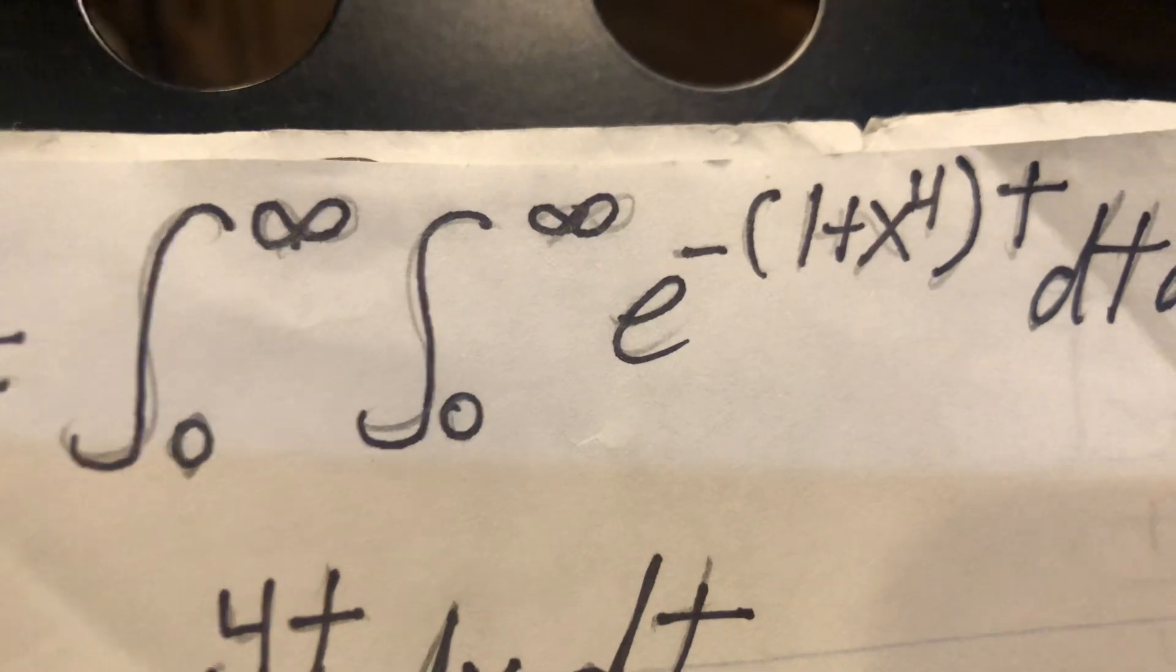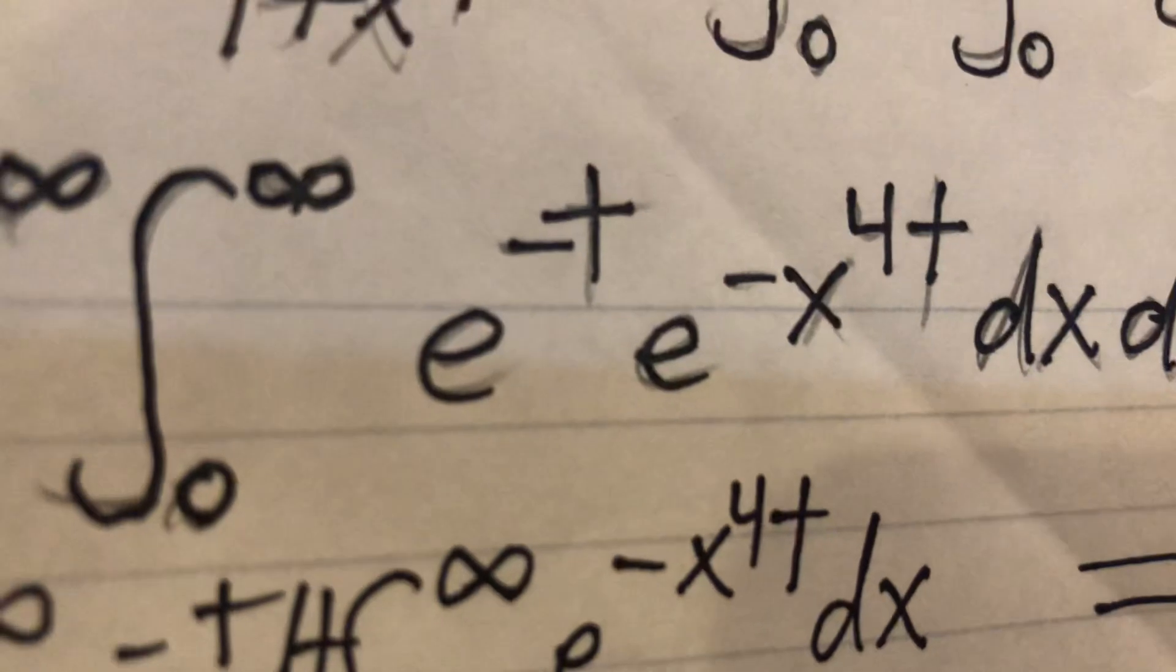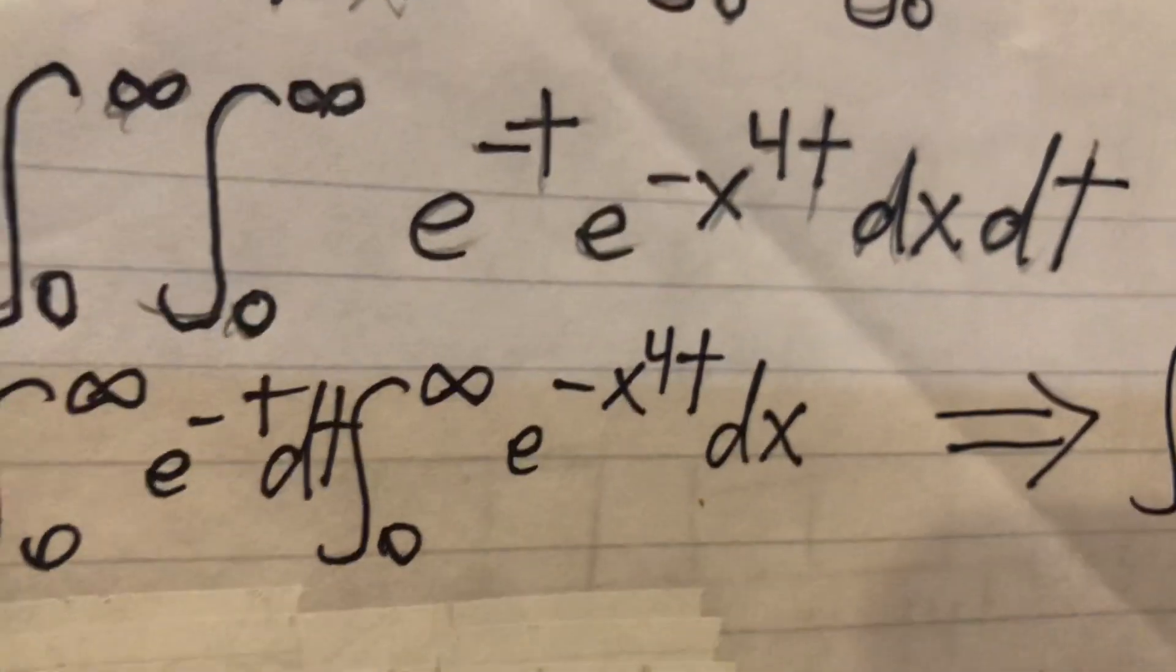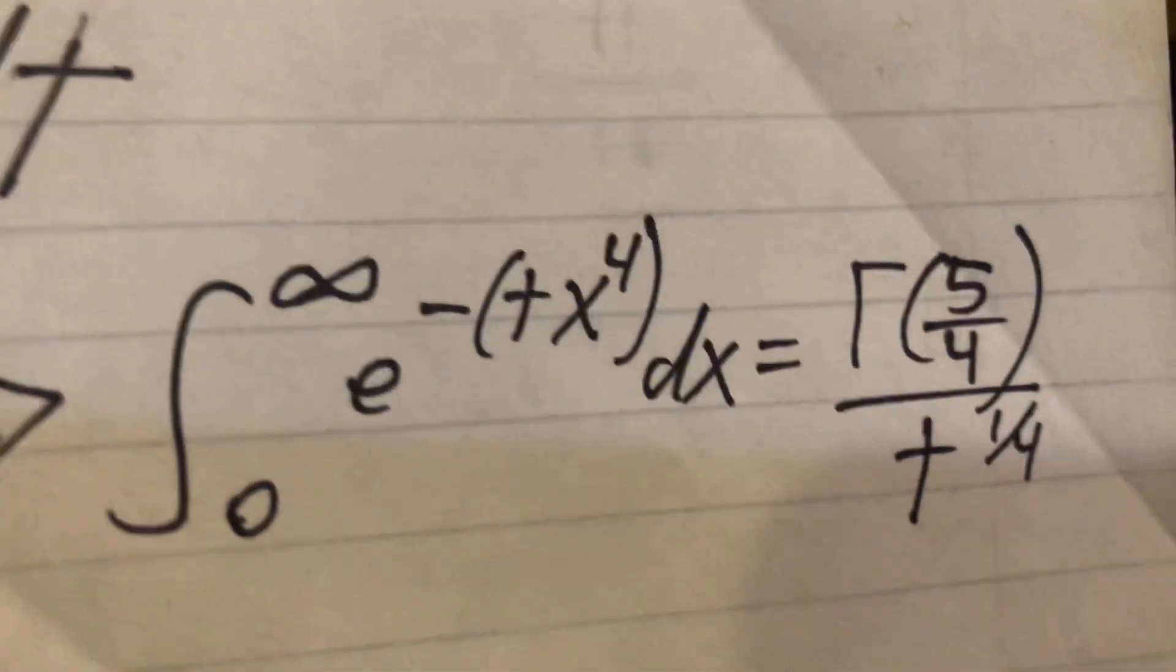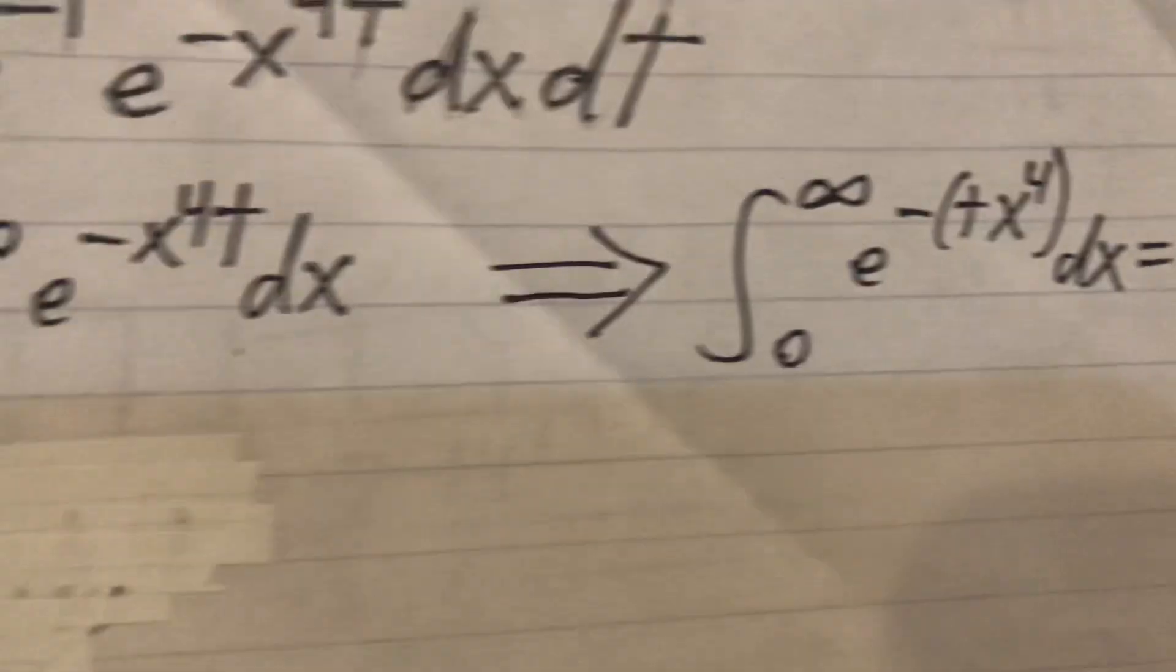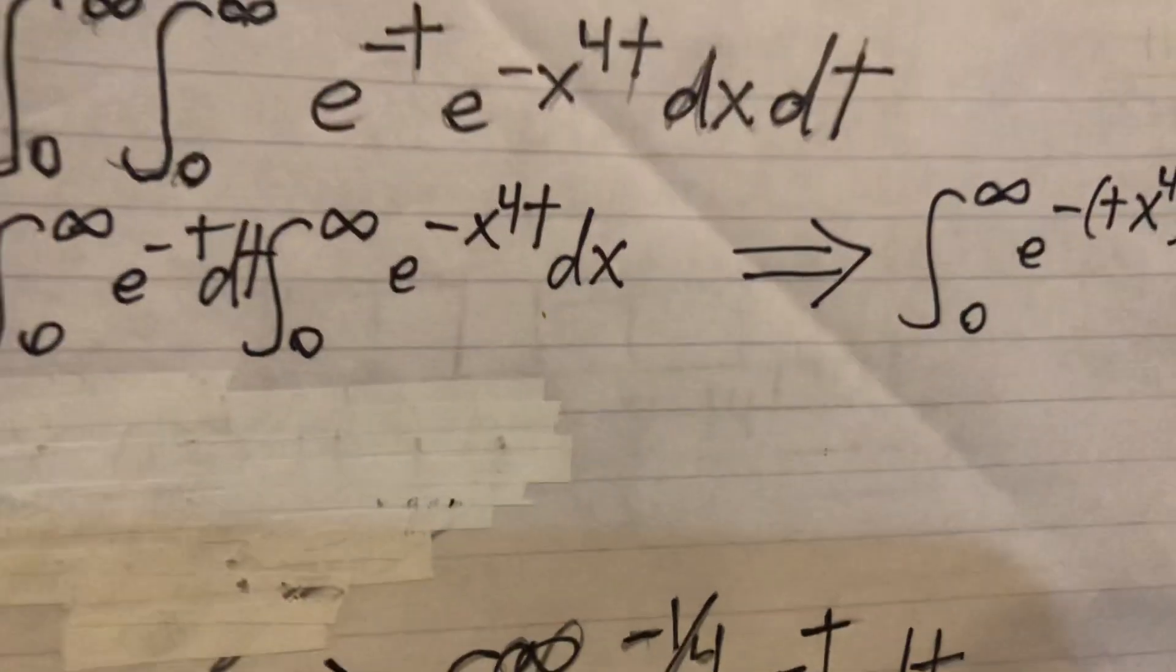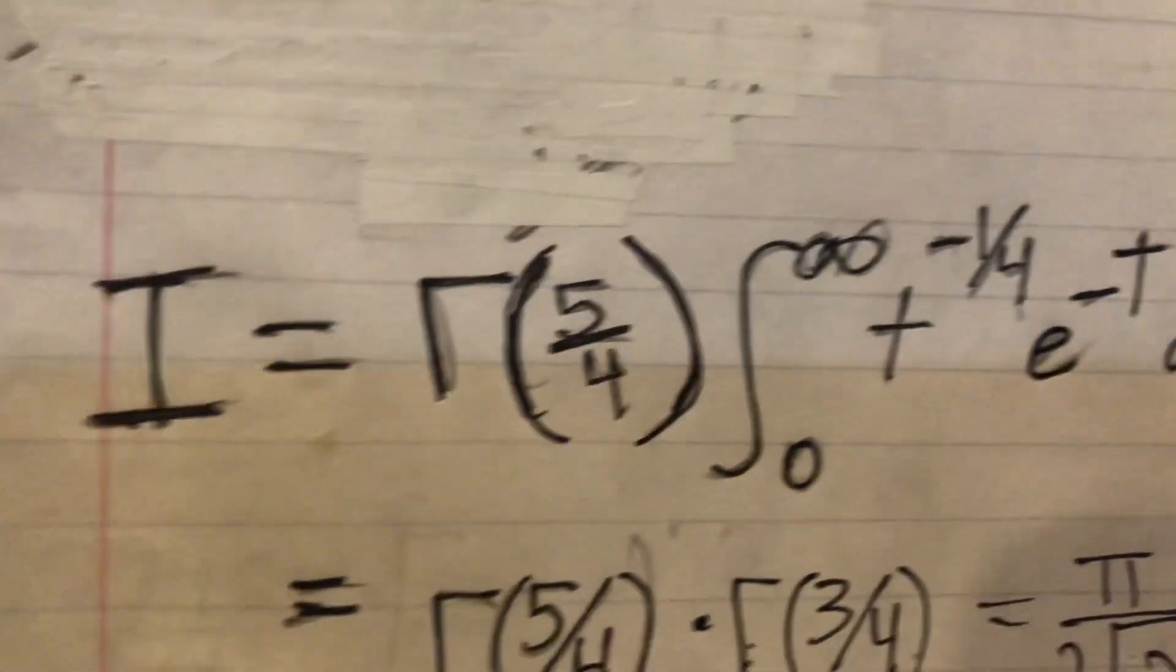So you see how we did that. We just took the t, ignored the dx part. Just look at this part, and that gives you 1 over 1 plus x to the fourth - that just gives you the integrand right there.